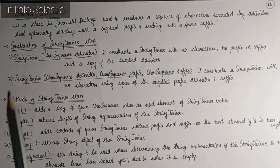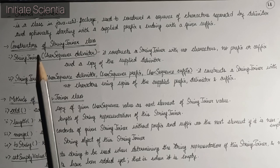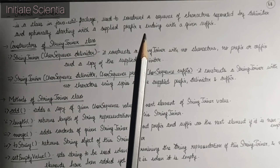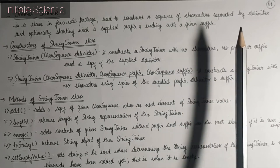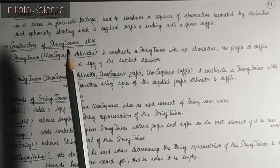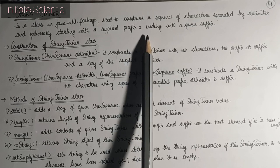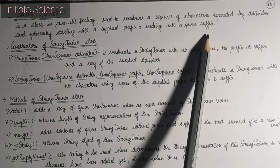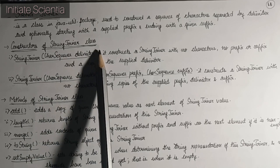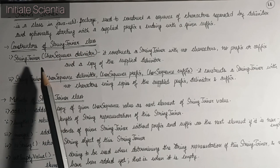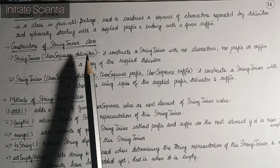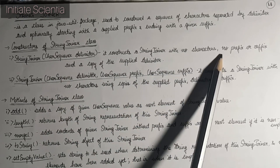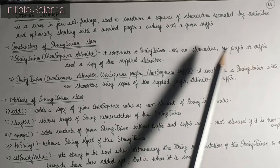Next, StringJoiner. StringJoiner is a class in the java.util package that is used to construct a sequence of characters separated by a delimiter, and optionally starting with a supplied prefix and ending with a given suffix. Constructor one: StringJoiner(CharSequence delimiter) — this constructs a StringJoiner with no characters, no prefix or suffix, and a copy of the supplied delimiter.